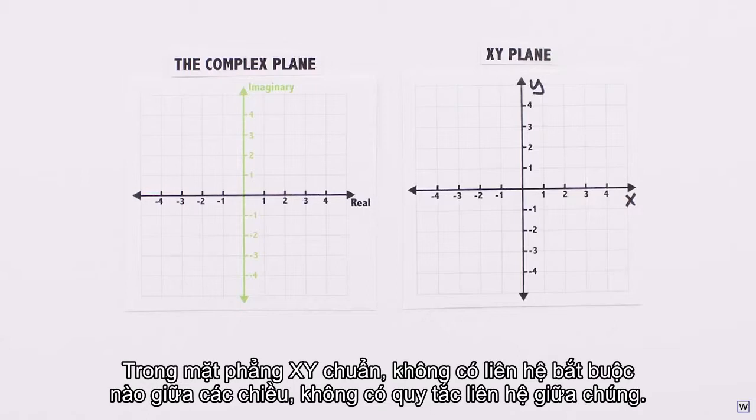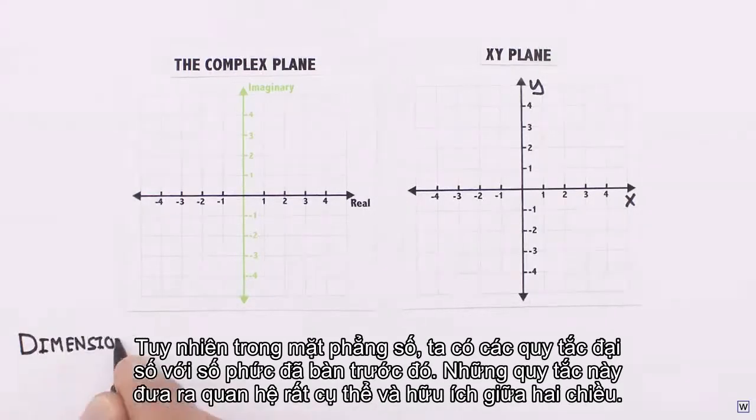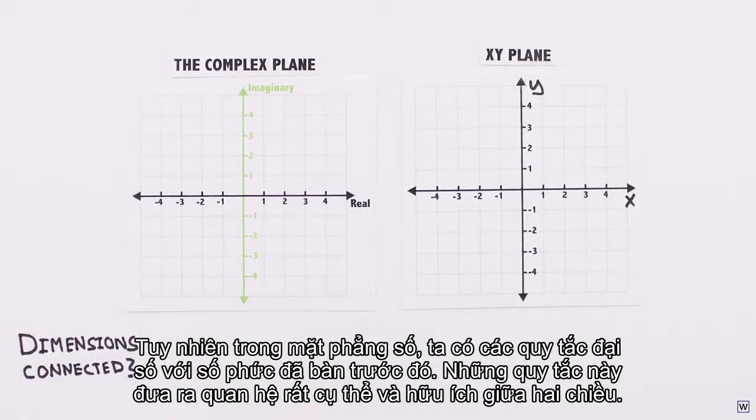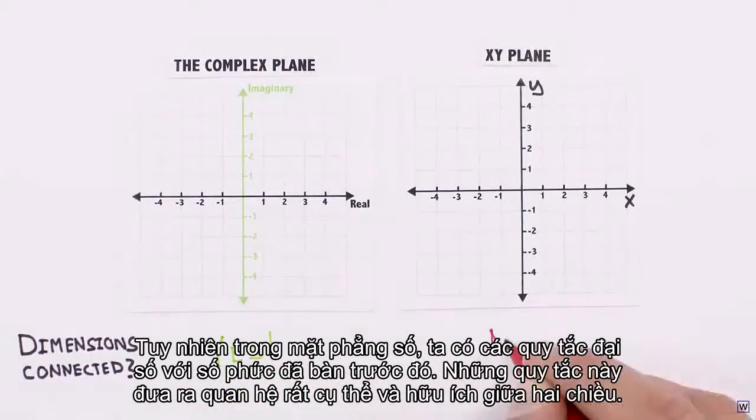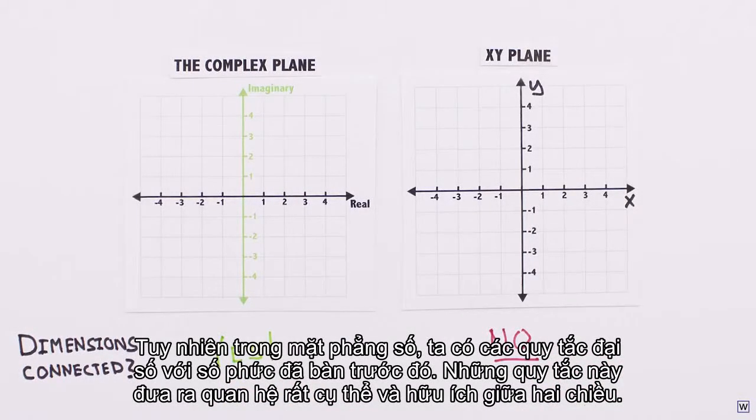no rules about how they should relate to each other. On the complex plane, however, we have the rules of algebra with complex numbers we discussed earlier. These rules impose a very specific and useful relationship between the two dimensions.